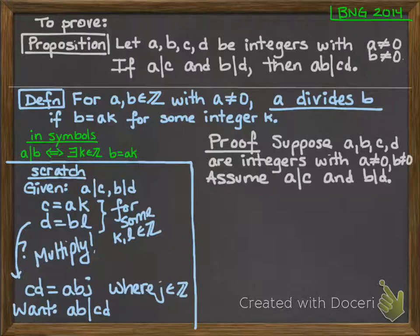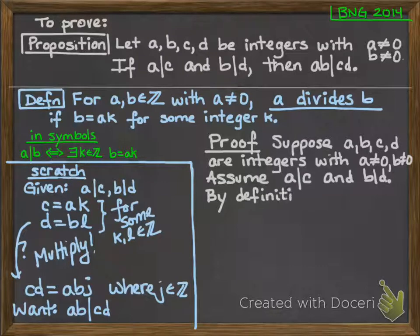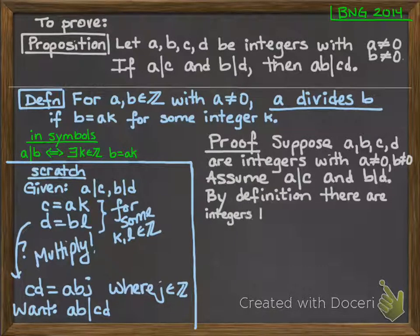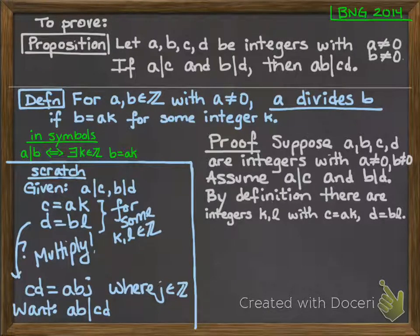Now I'll follow my scratch work. So over here in my scratch work, I could see that the next thing I did was to rewrite using the definition. So I'll say that here. By definition, there are integers k and l with c equal ak and d equals bl.